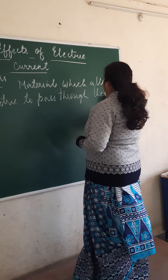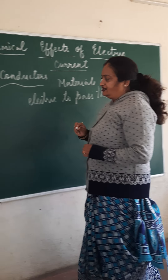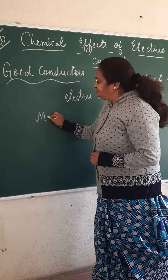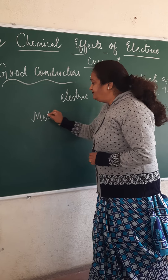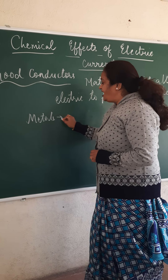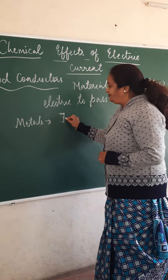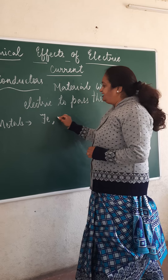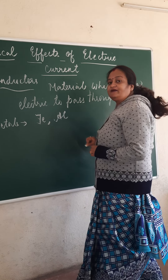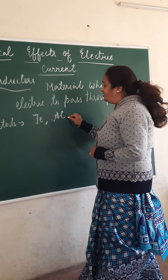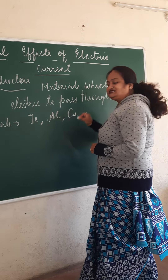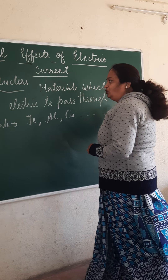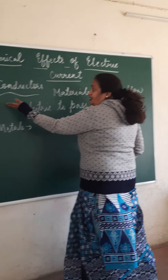A common example for good conductors are metals — generally all metals. For example, iron with symbol Fe, aluminium with symbol Al, copper with symbol Cu, and so on.